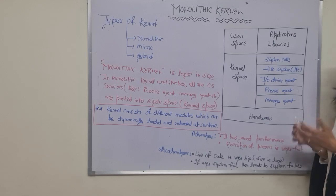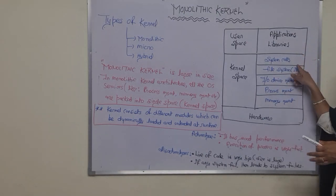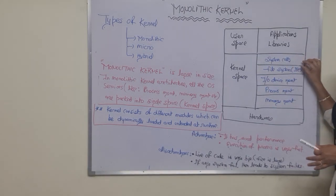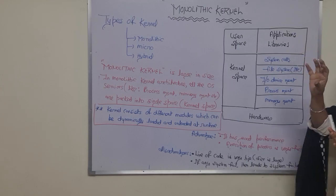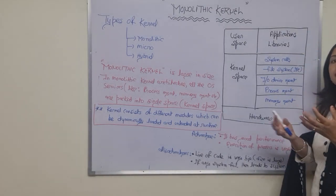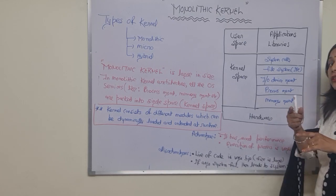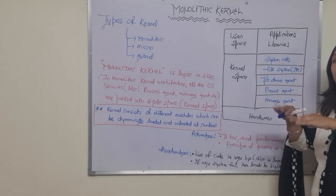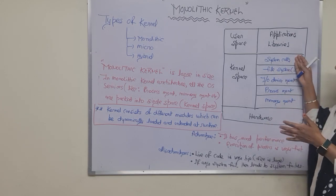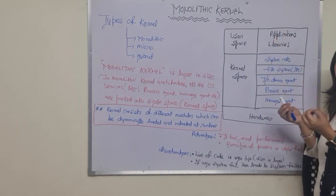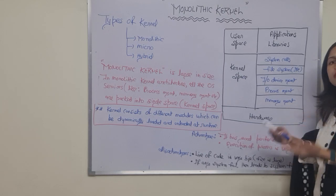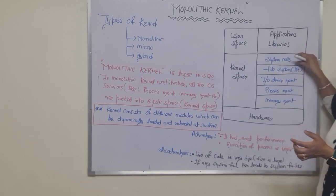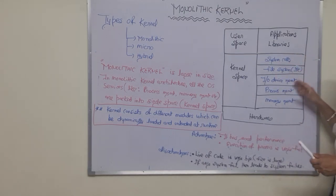I'll explain system calls in detail in a separate video, but for now: a system call refers to the commands issued when a program is compiled and a process starts — for example, open file, create file, close file. These are system calls — commands the user gives to start or execute a process.